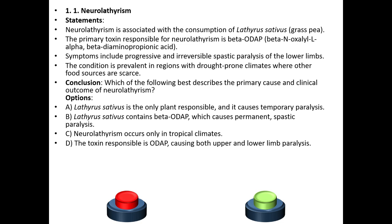First question: Neurolathyrism. Statement: Neurolathyrism is associated with the consumption of Lathyrus sativus, or grass pea. The primary toxin responsible for neurolathyrism is beta-ODAP. Symptoms include progressive and irreversible spastic paralysis of the lower limbs.